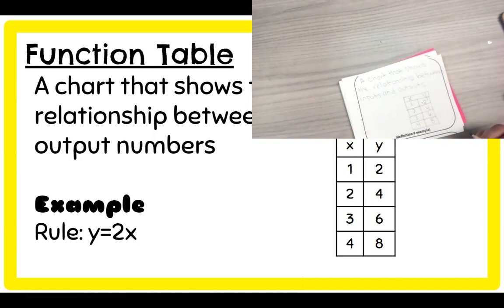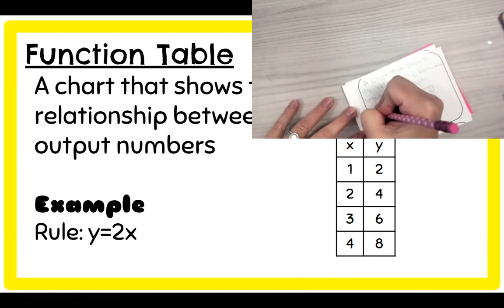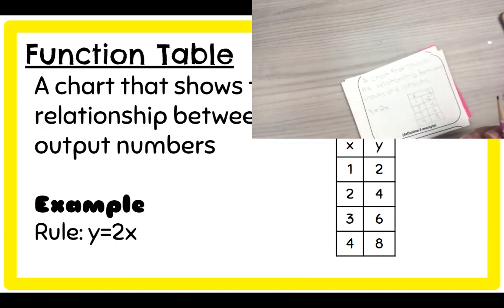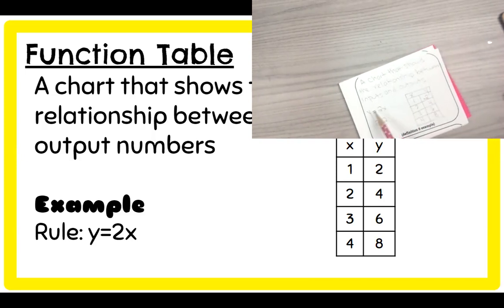So this rule is Y equals two X. The reason why is let's look at an example. If Y equals two, right? If Y equals two, two times one equals two. So two equals two. So you're just plugging in these numbers for X and Y.